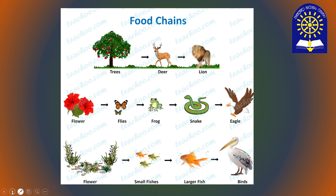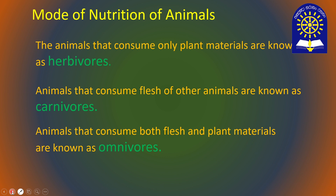According to the type of food an animal eats, we can group animals into three. Some animals eat only plant matter — they are known as herbivores. For example, deer, rabbit, and parrots. Some animals consume the flesh of other animals — they are known as carnivores. Lion, fox, eagle, crocodile, and even spider belong to carnivores.